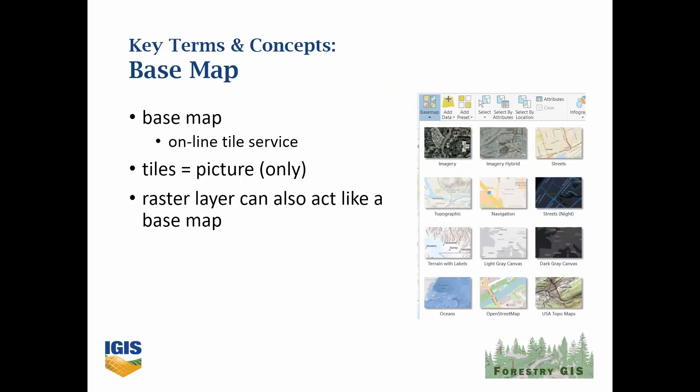A base map, or background map, is an image you can put in the background of your map, such as a satellite image or a road network. There are dozens of base maps you can pick from in most GIS software, provided for free as tile services by GIS companies like Esri, Stamen, and many others. The caveat is what you see is what you get — unlike your own data, you can't change the appearance of tiled base maps.